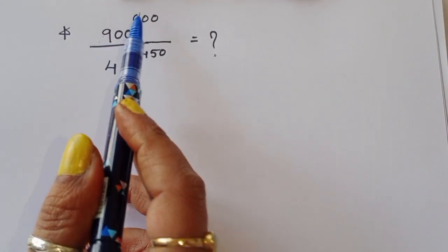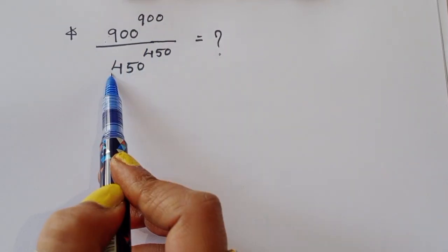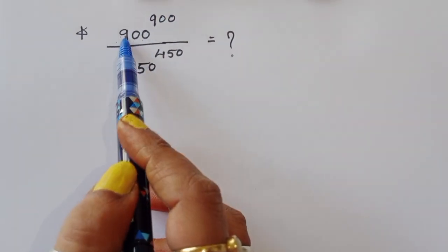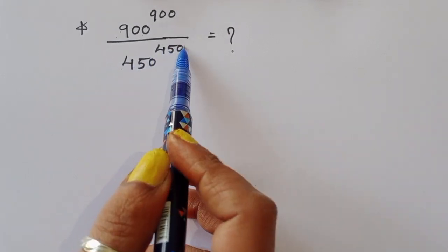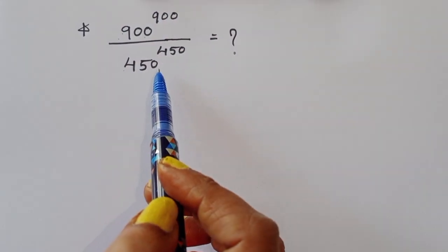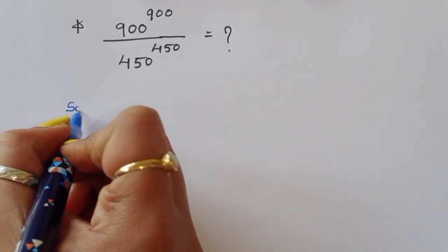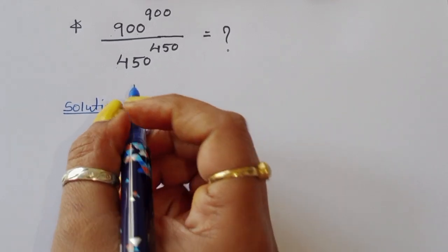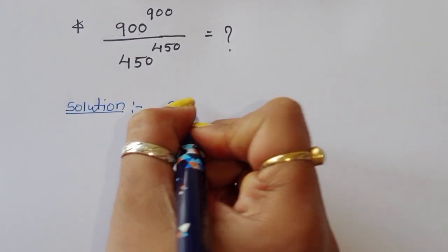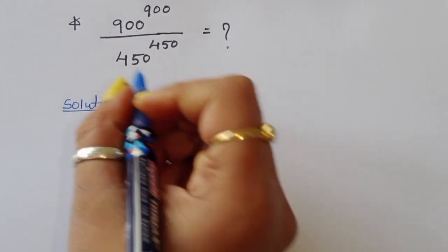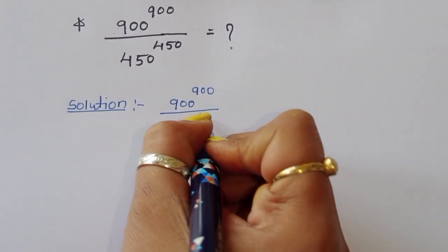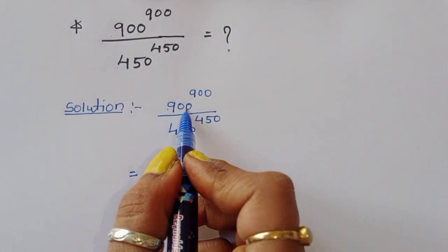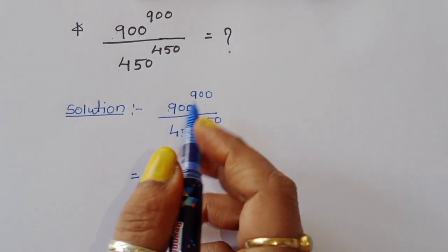The question is: 900^900 divided by 450^450. You can see that in the numerator, the base and power are both 900, and in the denominator, the base and power are both 450. We need to find the value of this expression. Let's look at the solution. We can convert 900 into 450 form: 900 equals 450 times 2.